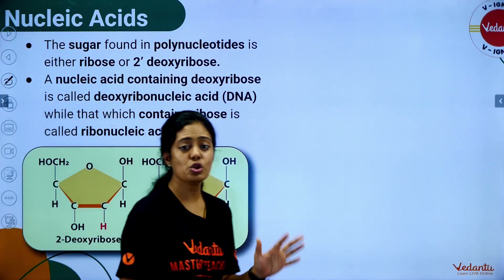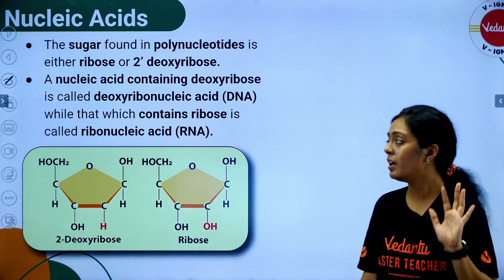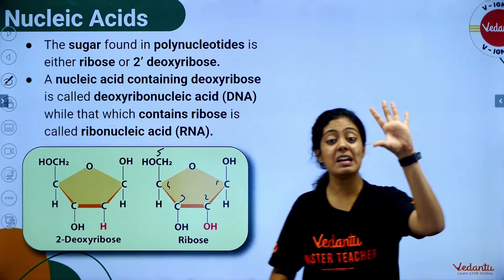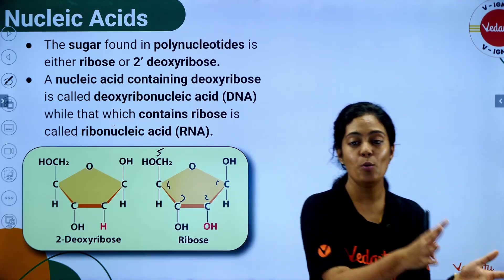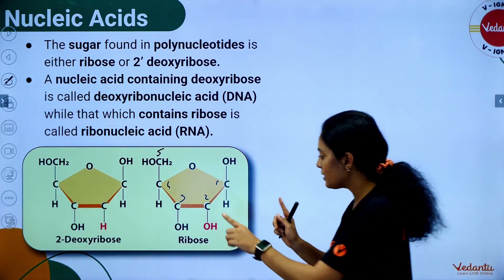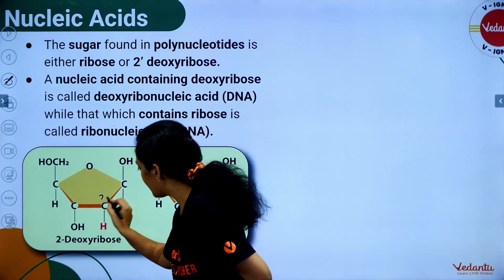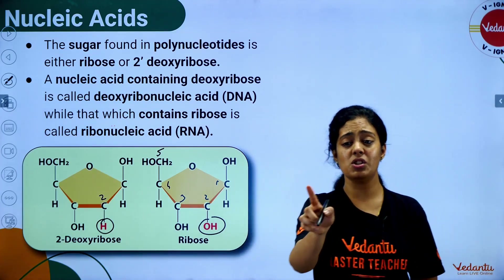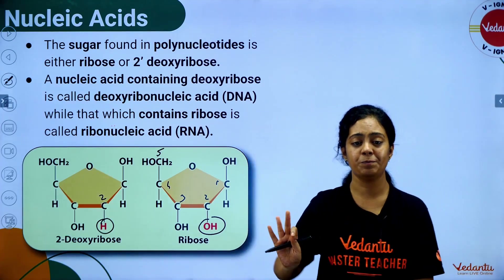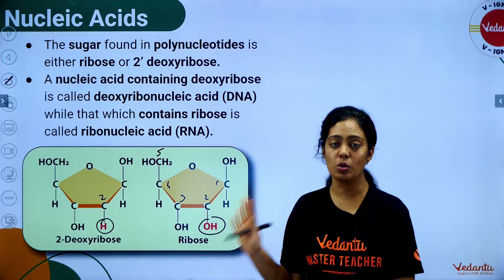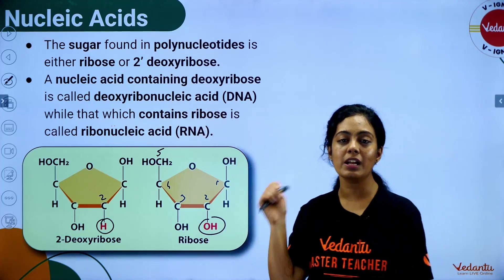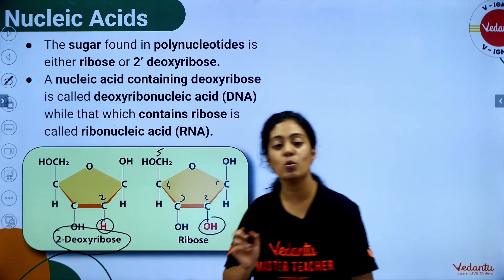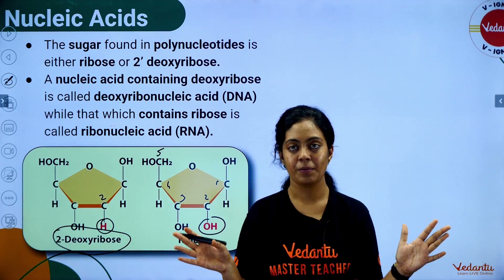The sugar in nucleic acids is a 5-carbon ribose sugar — carbons 1 through 5. There are two types: ribose and deoxyribose. The difference is at the second carbon — deoxyribose has no oxygen at the second carbon. That's why DNA is called deoxyribonucleic acid and RNA is ribonucleic acid. The presence of deoxyribose sugar makes DNA more stable than RNA.